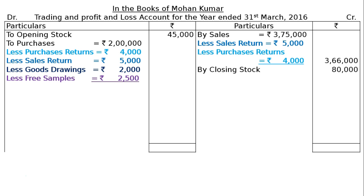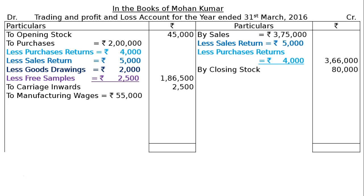When distributing goods for publicity or advertisement, it could be written as 'less advertisement rupees 2,500' or 'less free samples rupees 2,500'. You deduct it from purchases and show it directly in the Profit and Loss Account as 'free samples'. The final column shows rupees 1,86,500. To carriage inwards rupees 2,500. To manufacturing wages rupees 55,000.